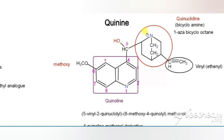The quinuclidine ring portion has nitrogen and two rings, making it bicyclo. So the chemical name for quinuclidine is 1-azabicyclooctane. Quinine has two rings: one is a quinoline ring and another is a quinuclidine ring, and these two are connected by means of a hydroxymethyl group.